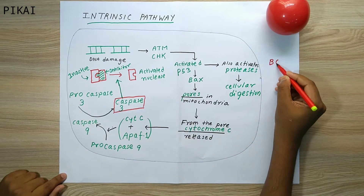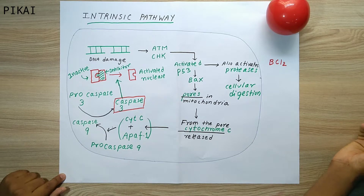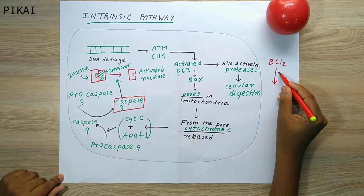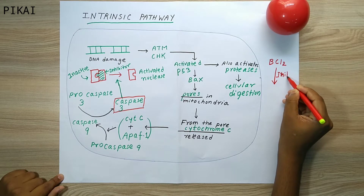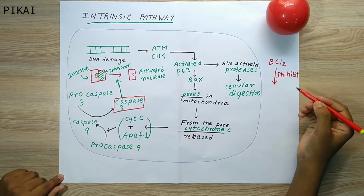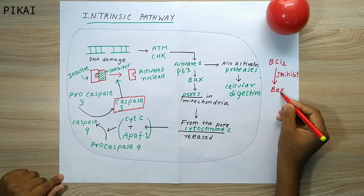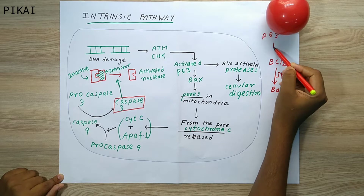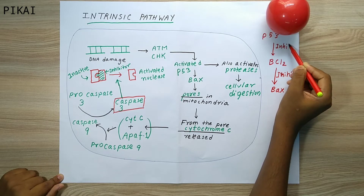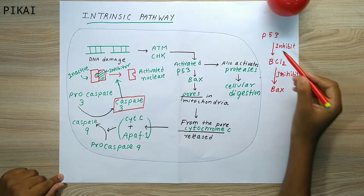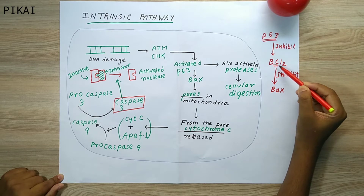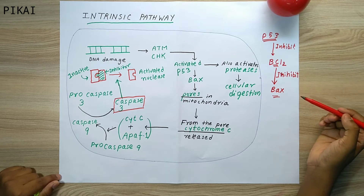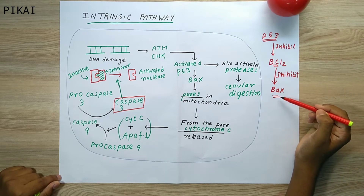There is another molecule known as BCL2. BCL2 inhibits the BAX protein, stopping it from creating pores in the mitochondria. However, when BCL2 inhibits BAX too strongly, p53 inhibits BCL2 itself — acting as a feedback mechanism. So BCL2 inhibits BAX, and p53 inhibits BCL2 — this is the regulatory pathway in apoptosis.